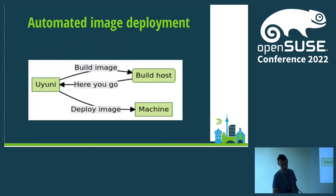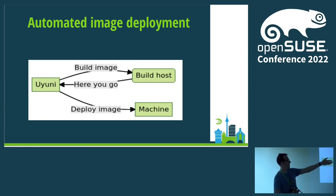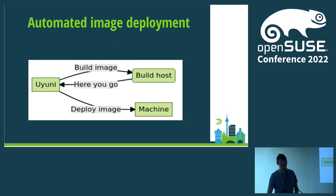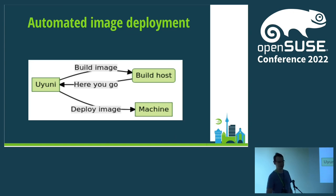Now where are we in our automated image deployment? We've asked the build host to build the image and it gave us the image. We're back to deploying the image. We defined what an image is; we still don't know what it means to deploy.